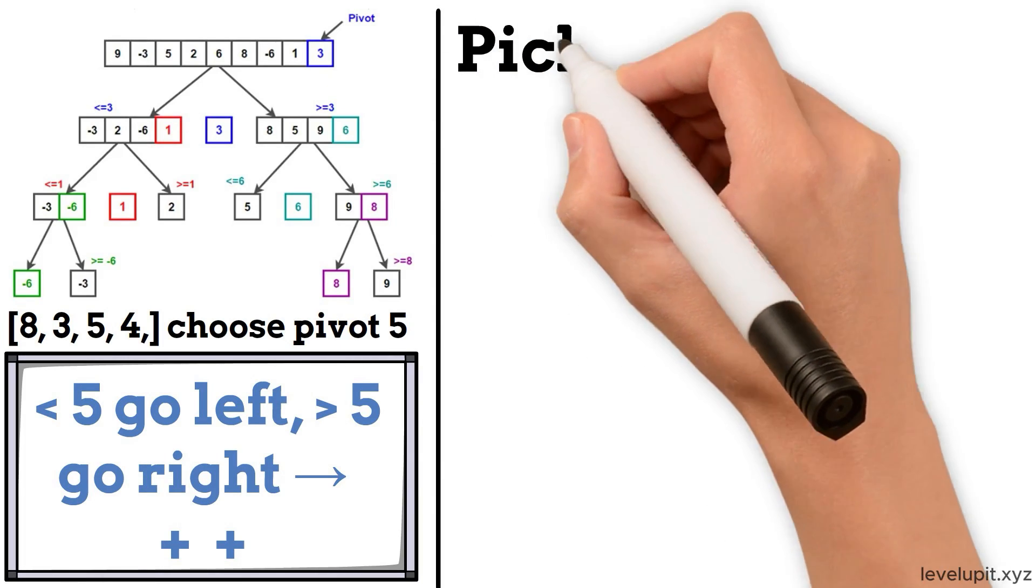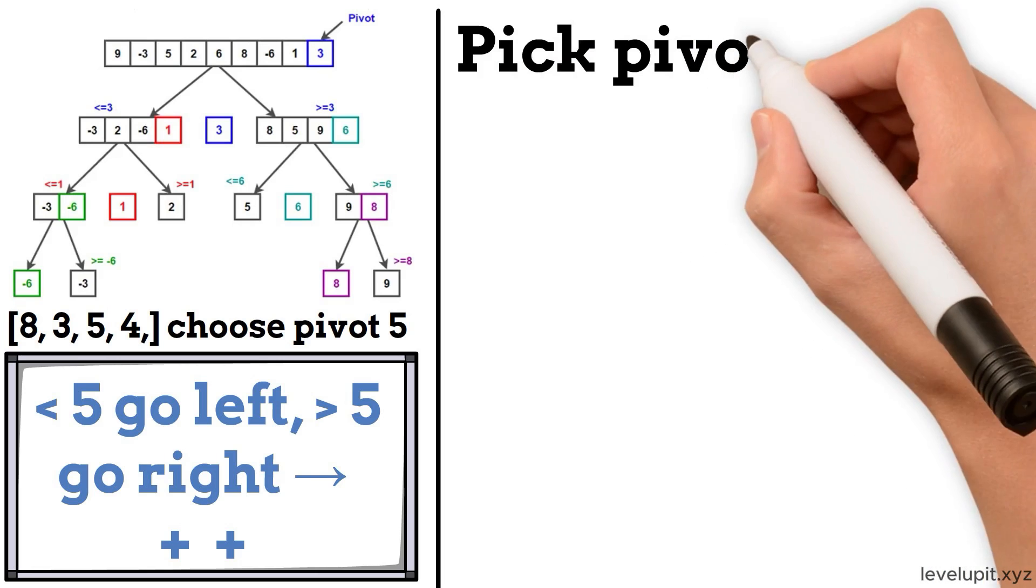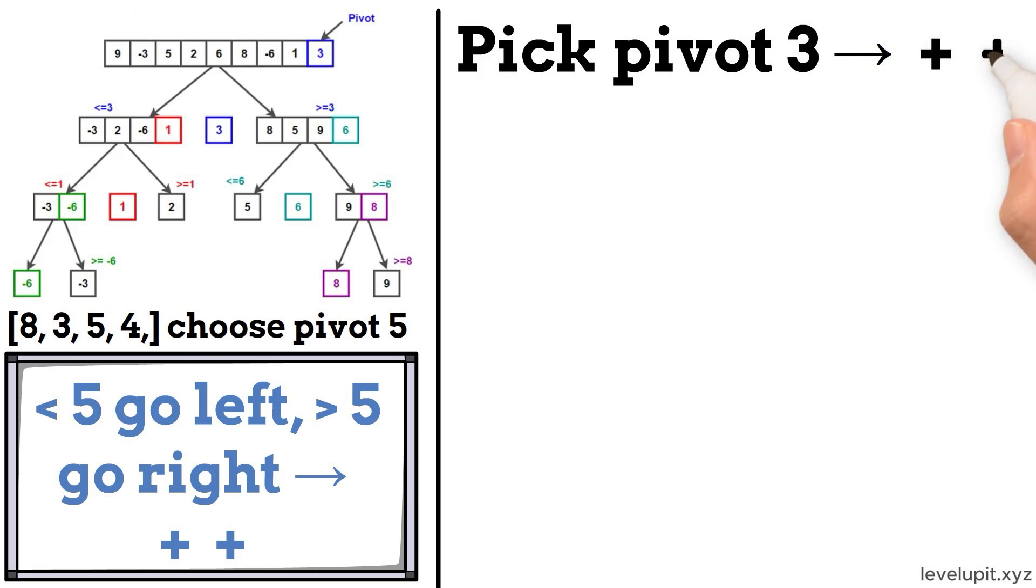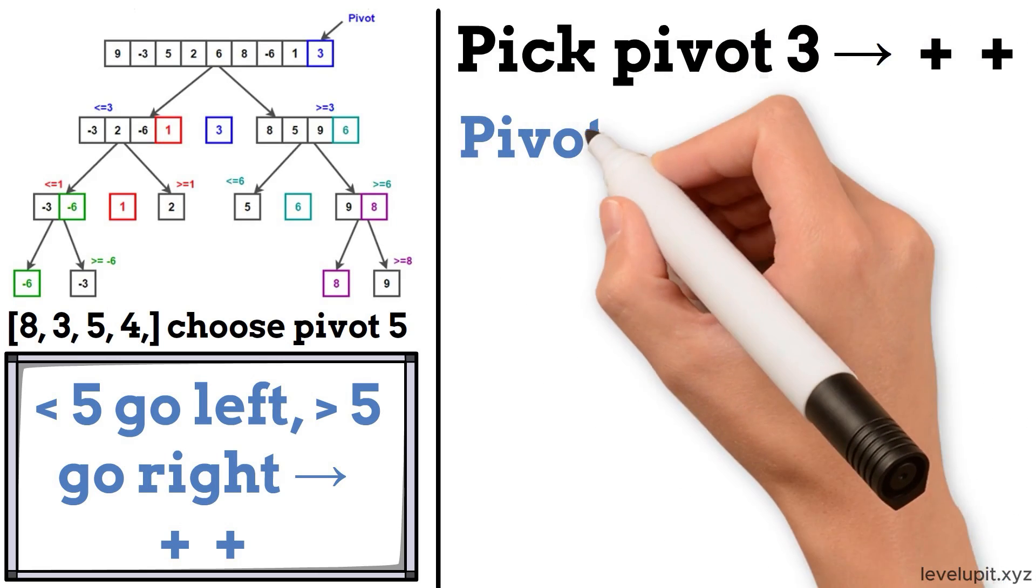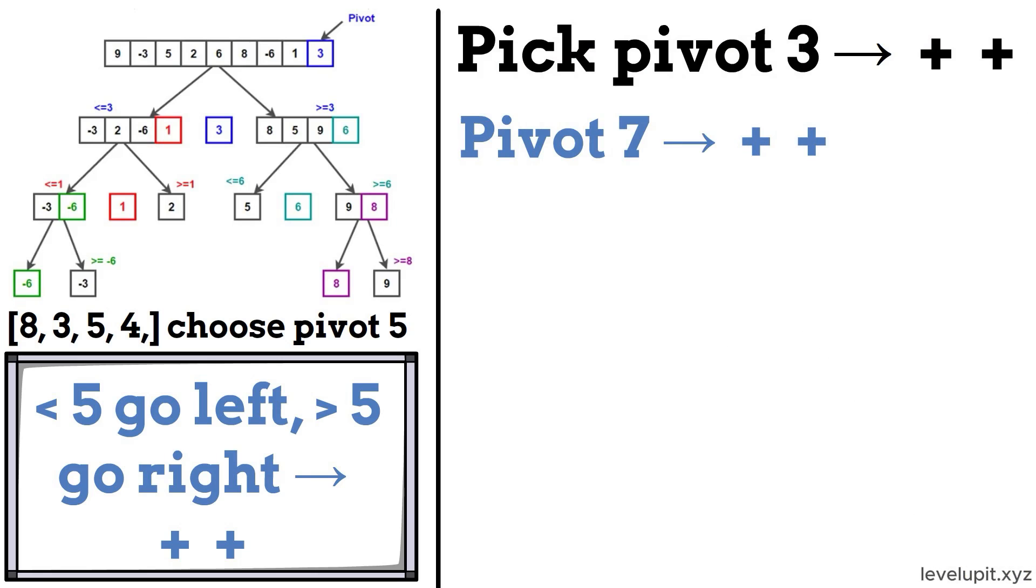On the left, pick pivot 3, then left plus pivot plus right. On the right, pivot 7, then left plus pivot plus right. Join them to get 1, 2, 3, 4, 5, 6, 7, 8.